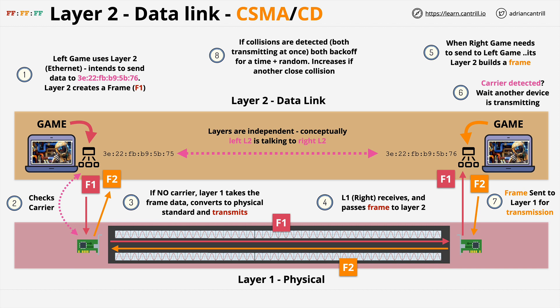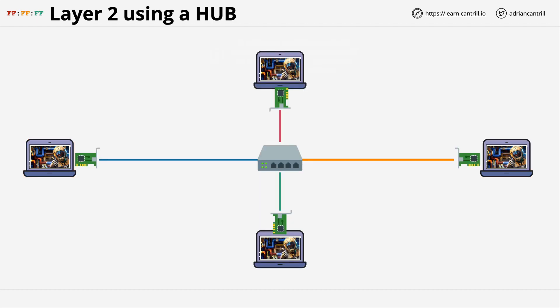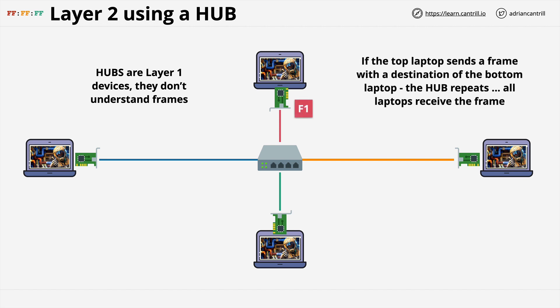This collision detection and avoidance is essential for layer two — it's what allows multiple devices to coexist on the same layer two network. Now, you have an idea about layer two networking. Let's revisit how our laptops are connected. In the previous example where I showed hubs, we had four devices connected to the same four-port hub. Hubs are layer one devices — this means they don't understand frames in any way. They just see physical data. Essentially, they're a multi-port repeater: they just repeat any physical activity on one port to all other ports.